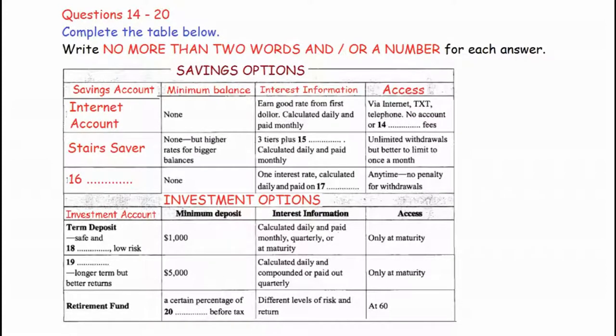Bonds are generally a longer commitment, but they may bring better rewards in the future. There is a minimum deposit of $5,000, and interest is calculated daily. You may choose to have interest compounded quarterly, or paid out quarterly. And, of course, you'll have access to your money when your bond reaches maturity.